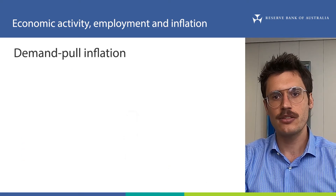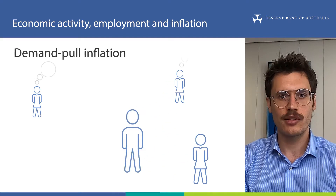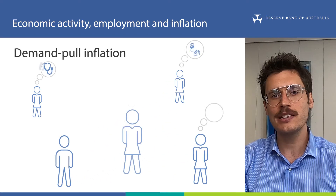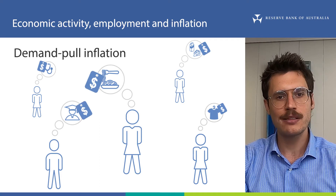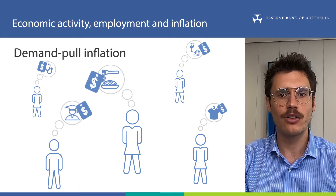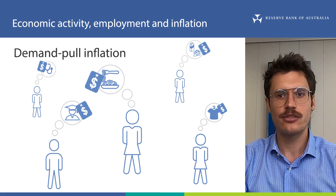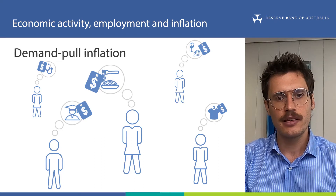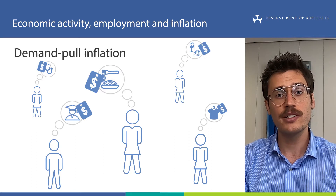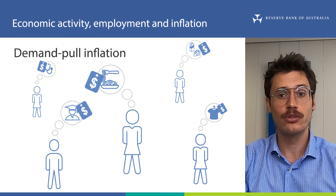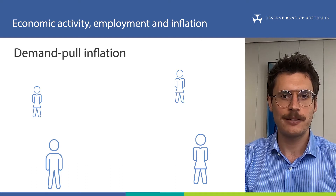In addition, if there's excess demand for a good or service, those wanting to purchase them might be willing to pay more to have them now, rather than waiting for more supply to become available over time. This will also pull up prices and therefore inflation. This is another chain of transmission from demand to inflation. We call this demand pull inflation. We can think of many examples of this happening.